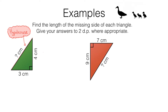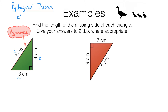Now let's label the lengths of the legs A and B. It doesn't matter which way round, so I'm going to label this one A and this one B. And let's label the length of the hypotenuse C. It's important to get the hypotenuse right. Once you've got A, B and C labelled we can use Pythagoras' theorem, which says that A squared plus B squared equals C squared.